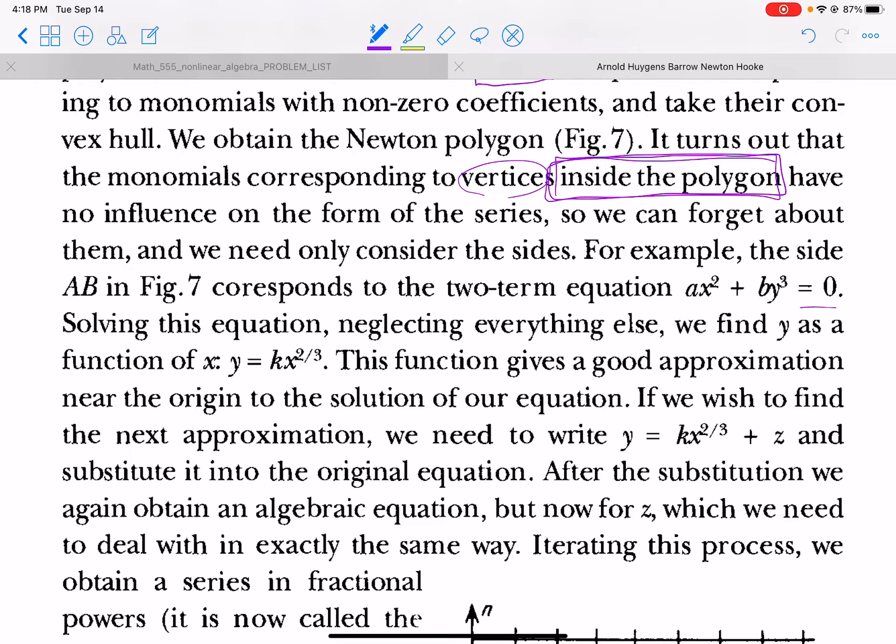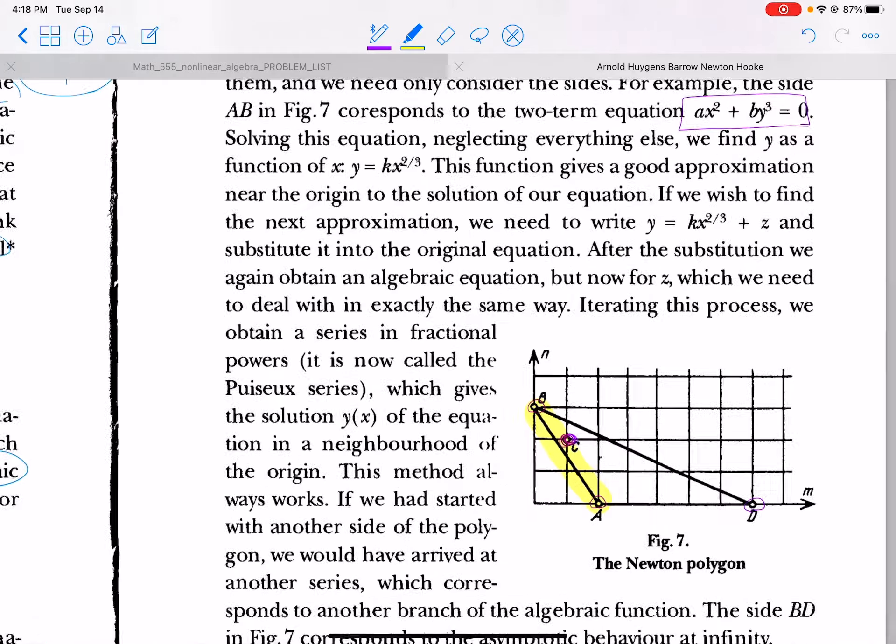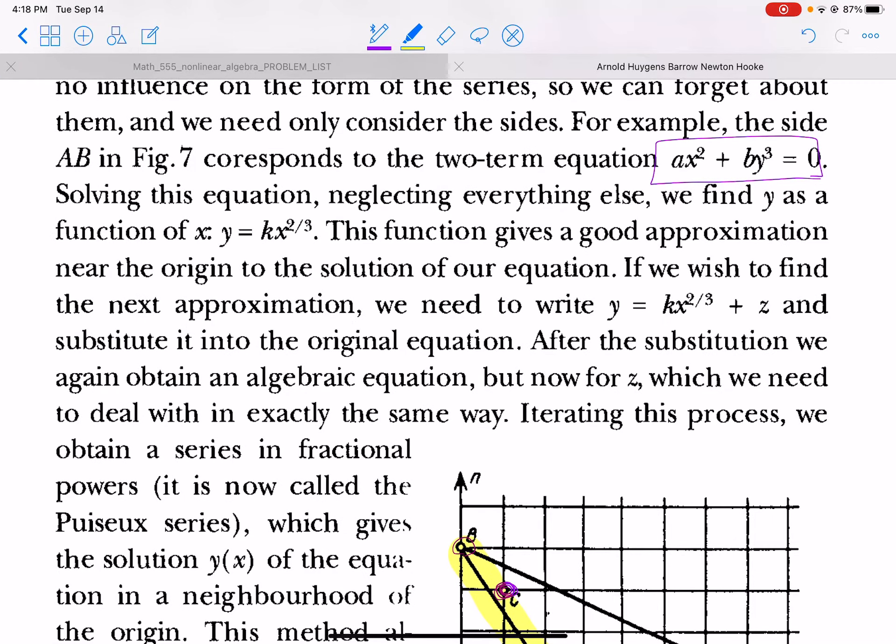So one, two, three, four terms were in our polynomial. And this is their the Newton polytope. It turns out that the monomials corresponding to vertices inside the polygon have no influence on the form of the series, so we can forget about them and we need only consider the sides. For example, the side AB in Figure 7 corresponds to the two-term equation like this.